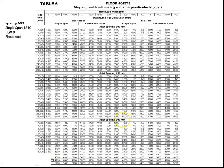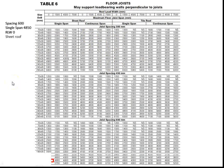Bear in mind that every span table is specific to a stress grade of timber. Just above the table is usually the stress grade this table applies to. You need to make sure you're sizing up the correct grade — it might be F14, F17, MGP12, or anything else. Just make sure you're using the right table appropriate to the stress grade of timber you're using.